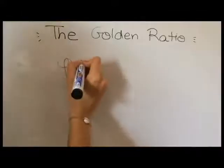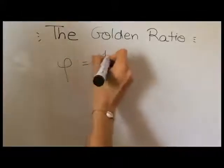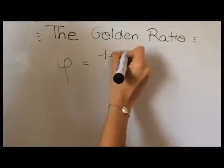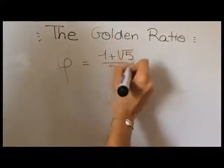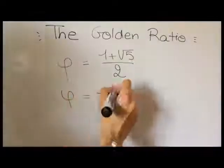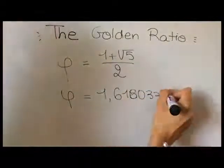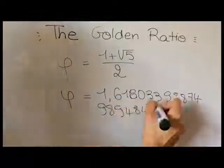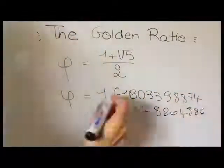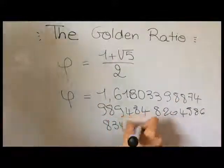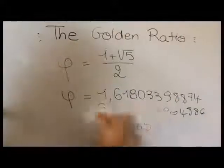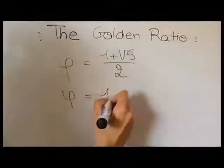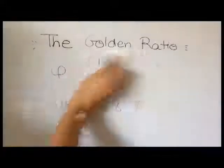The Golden Ratio is a very special number, symbolized by the Greek letter phi and equal to 1 plus square root of 5 divided by 2. Phi is an irrational number, which means that the numbers after the decimal point just keep on going in no pattern, but we usually round it down to 1.618.